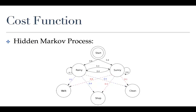The blue dotted lines represent the hidden feature 'rainy,' showing that the likelihood of walking, shopping, or cleaning differs — mainly that walking has a very low probability when it's raining. The red lines represent the same thing for sunny. You would expect more walking and more shopping but less cleaning when it's sunny.